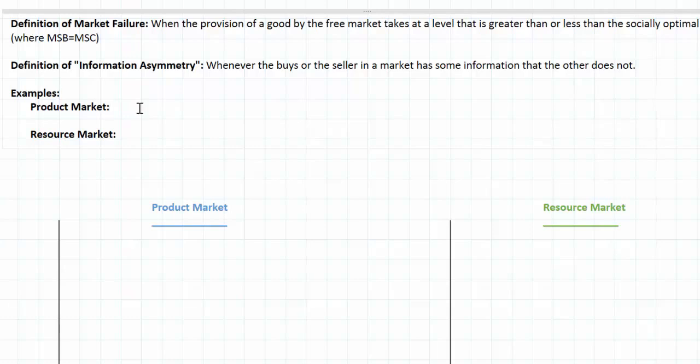We'll look at two different scenarios. We'll look at both a product market where the buyers are consumers and the sellers are firms, and we'll look at a resource market in which the buyers are firms looking to employ a particular type of labor, and the sellers are households who are looking to supply their labor in exchange for wage incomes.